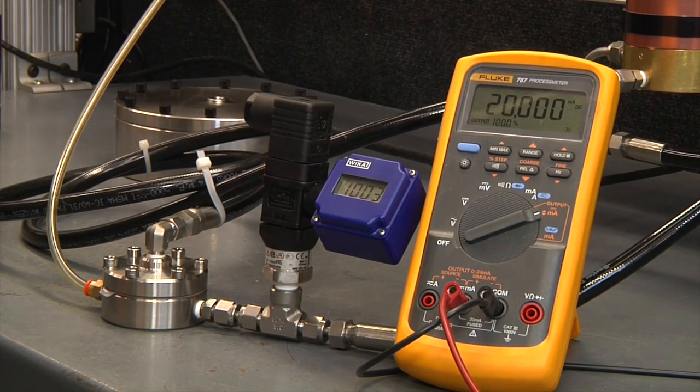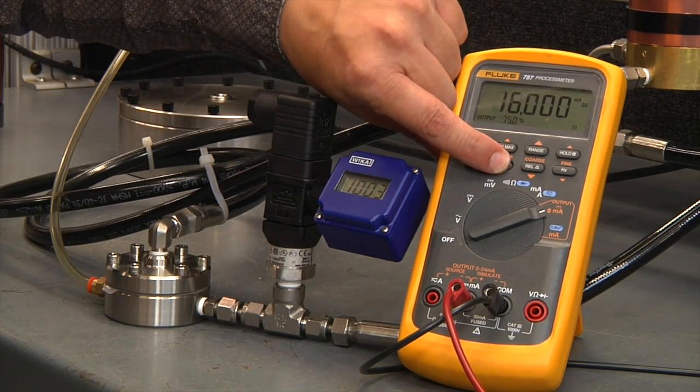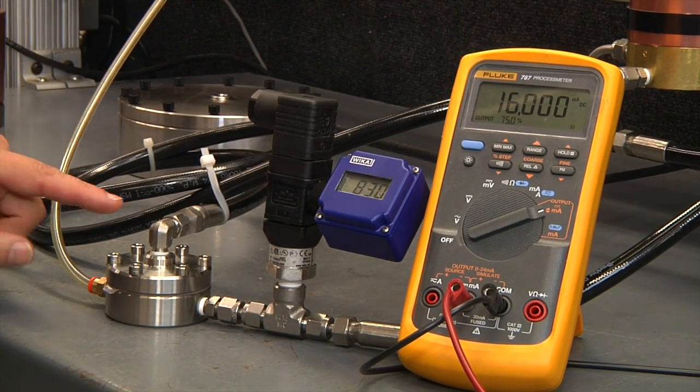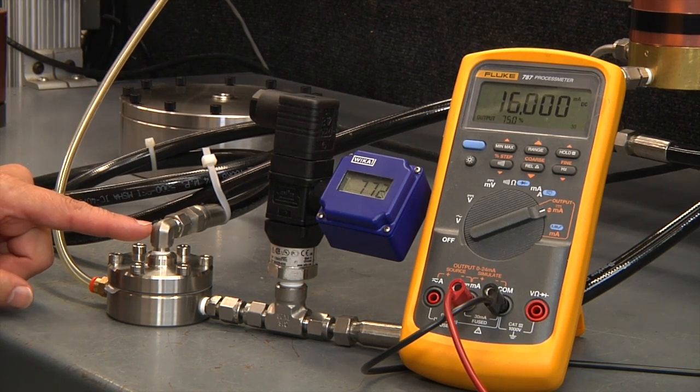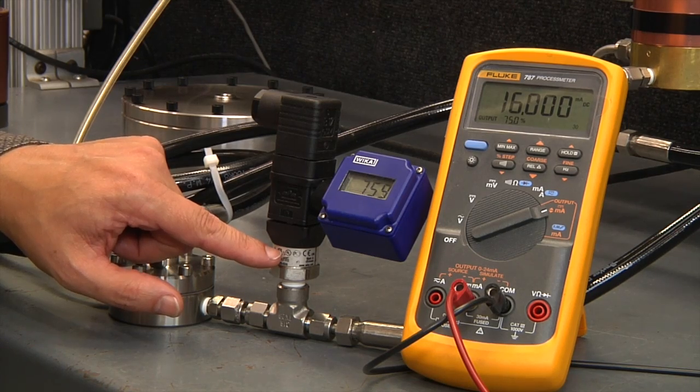The GX Series is a relieving regulator and by decreasing the command signal, we can reduce the pilot pressure on the back pressure regulator and therefore reduce the pressure in your system.